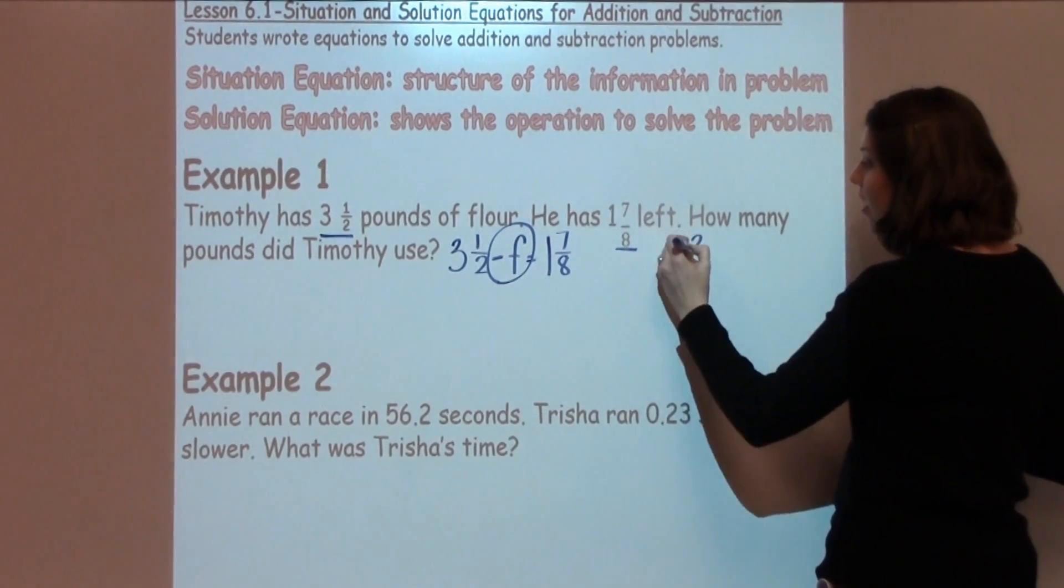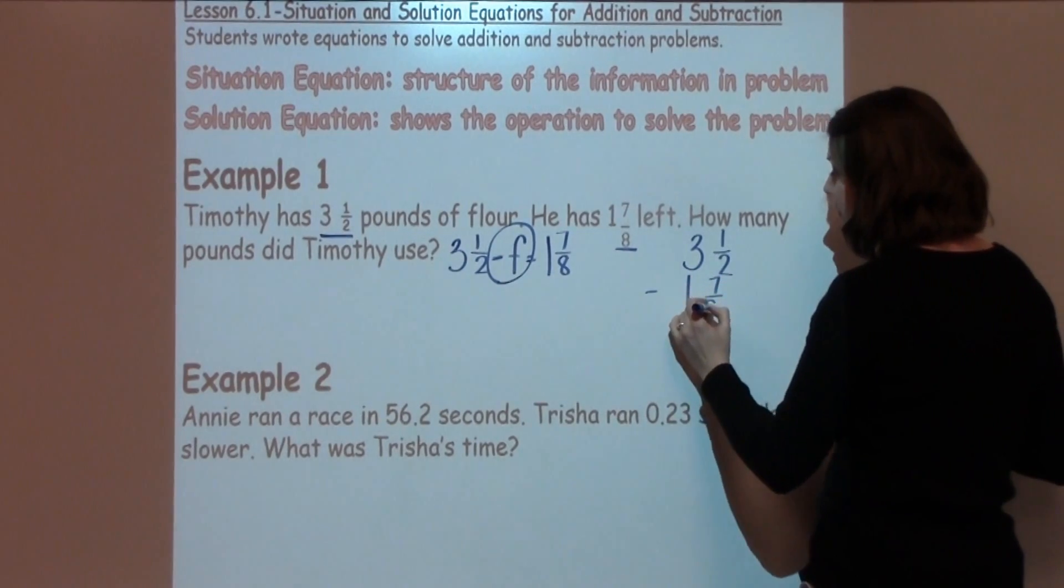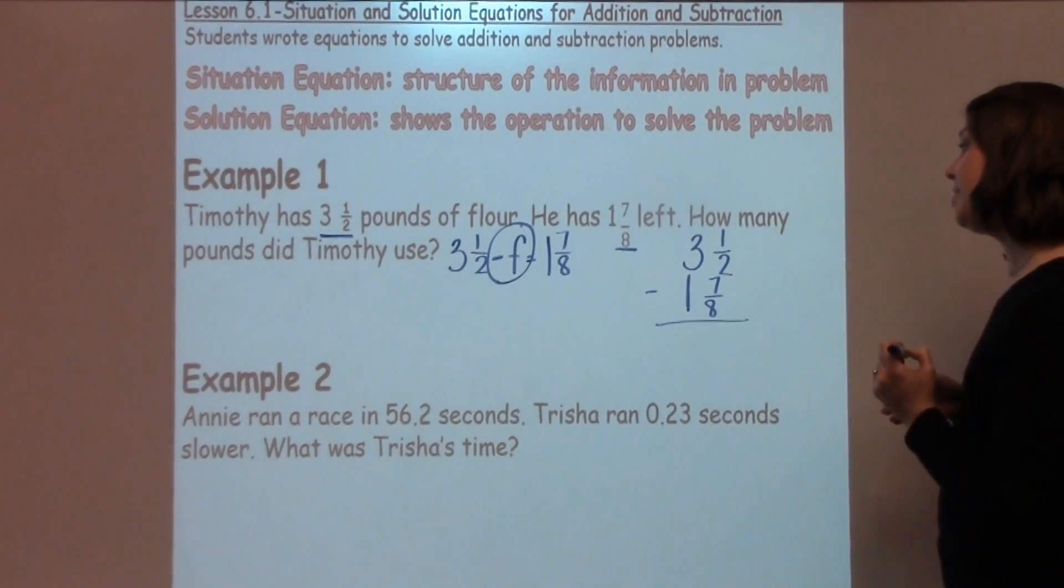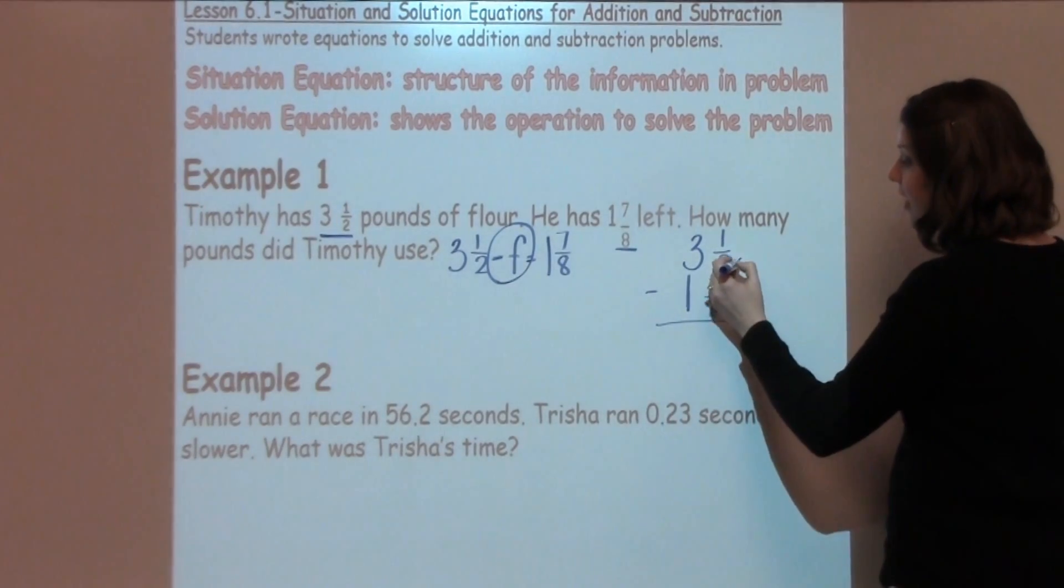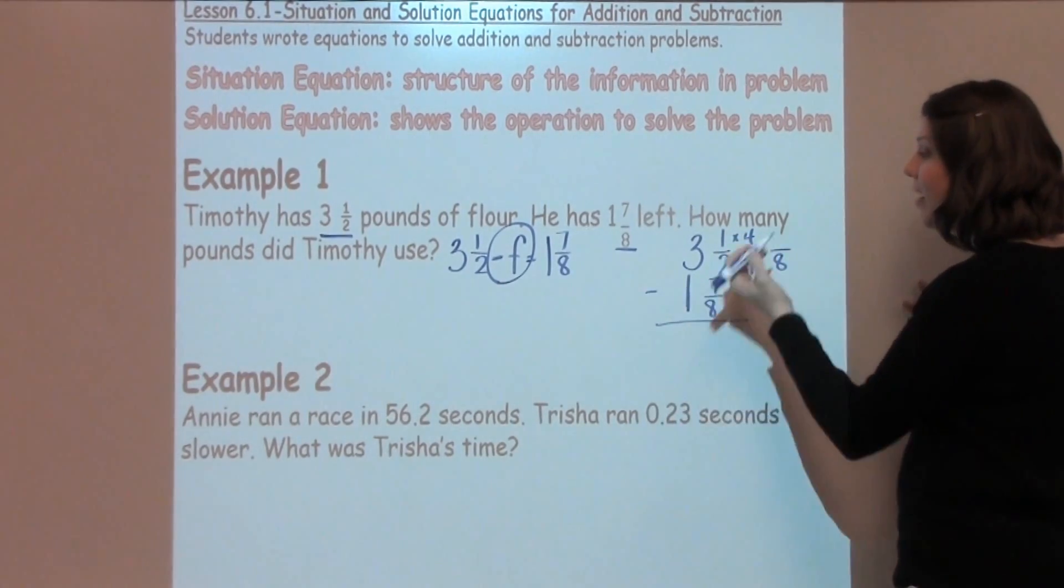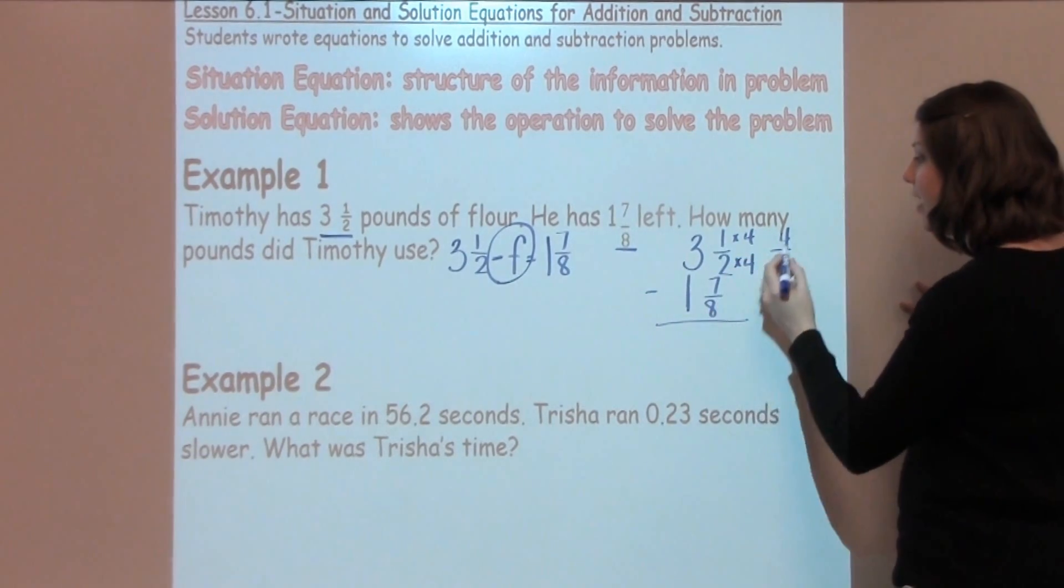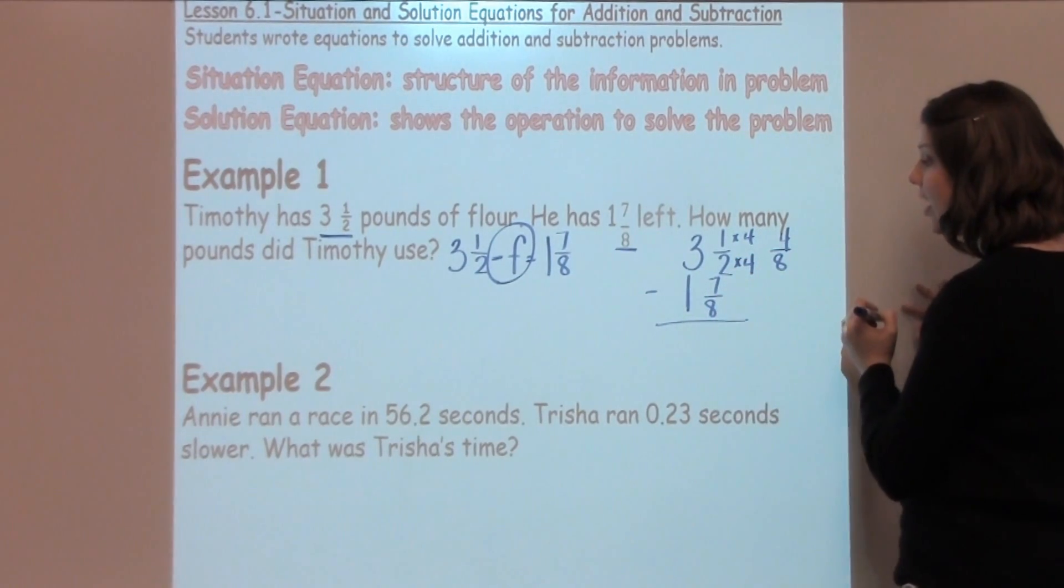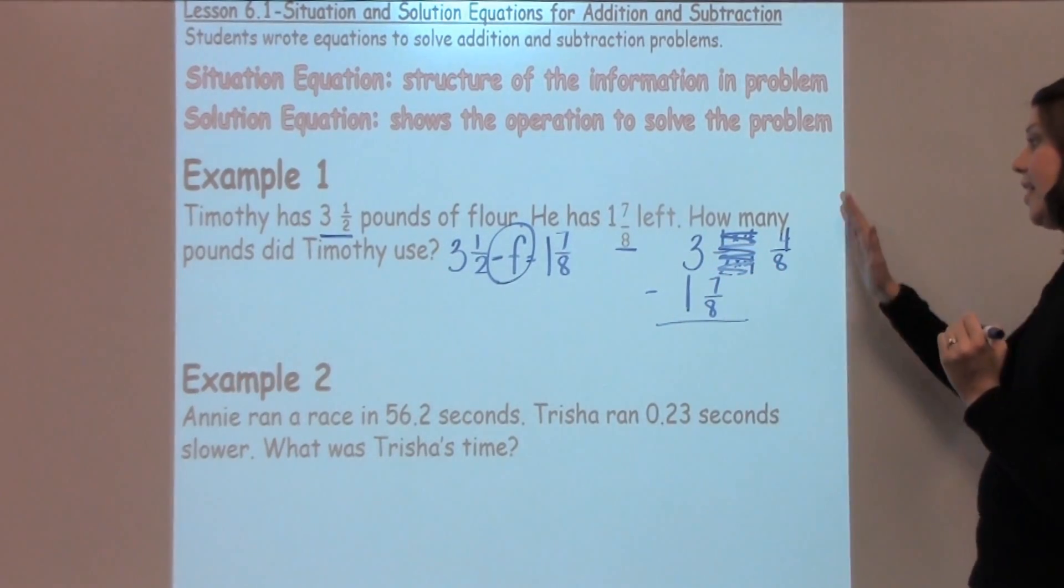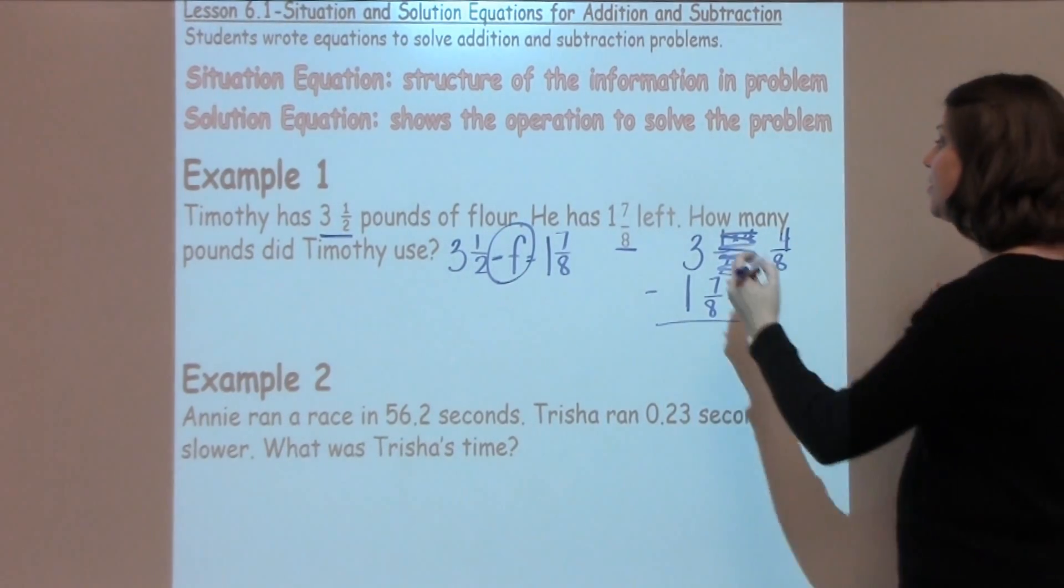This problem just becomes a simple fraction-subtraction problem, which should be a review for fifth graders. The first thing we notice is we don't have a common denominator, so I know I can take 2 times 4 to give me 8. If I do it to the bottom, I have to do it to the top. 1 times 4 is 4. And then I look at my problem, and I've got 4 8ths and 7 8ths. So that works out great. I like to cross this off so I don't get confused. Now I need to subtract.